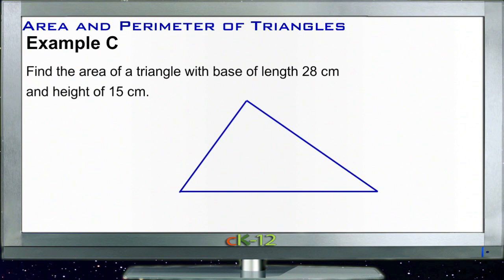Example C. Find the area of a triangle that has a base of length twenty-eight centimeters, and a height of fifteen centimeters. Well this one they've given us our information we want again, that's good. So we have twenty-eight centimeters this way, and a height of fifteen centimeters.